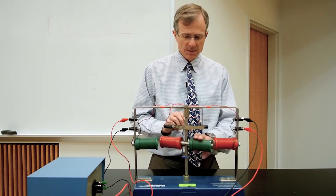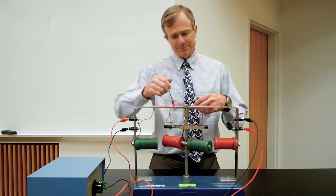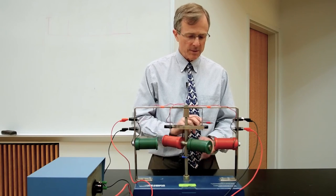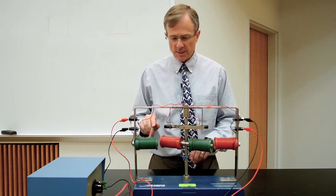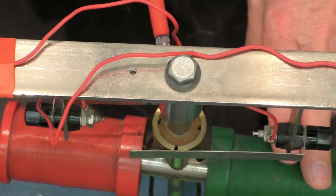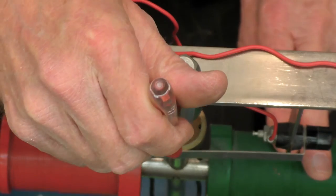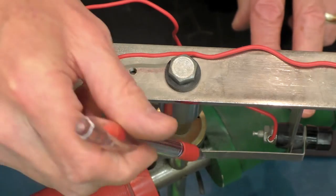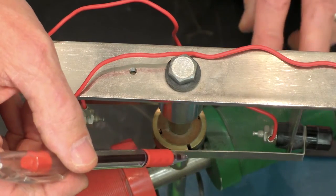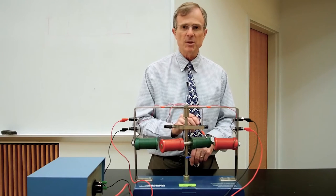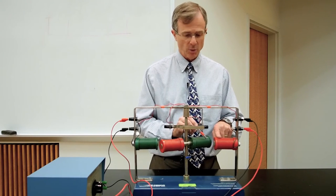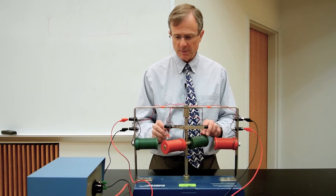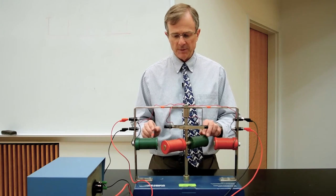So at this stage in the motion of the motor, this guy's south, this is north, they attract each other. Then when it passes this point, the commutator reverses the direction of the current through these guys. This now becomes a north pole and repels this north pole. Gets pushed away, same thing here. This becomes a south pole and repels the south pole.